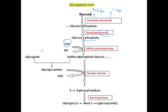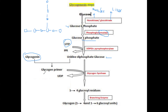After generating UDP-glucose, it is added to glycogenin — also called the glycogenin primer — which is the remnant of glycogen remaining in the body after glycogen is mobilized. Not all glucose from glycogen is broken down; some remnant is left. This remnant is called glycogenin, and it serves as the primer for the growing glycogen chain.